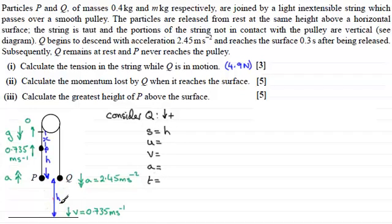First of all, we've got s, the displacement, u, v, a, and t. So what have we got? We've got s, which is h. U, the initial velocity, well it started from rest here, so that would be zero. V, we know is 0.735. We've got the acceleration, it's 2.45. And we have the time, 0.3. So if I'm trying to find h, I've got quite a few equations that I could use. It's up to you which ones you use. You could use v² = u² + 2as. You could use s = ut + ½at². You could use s = vt - ½at². But the one I'm going to use is s = (u + v)t / 2.